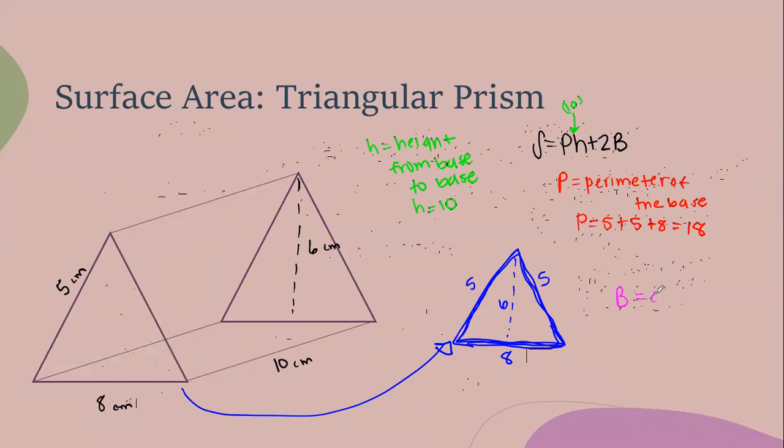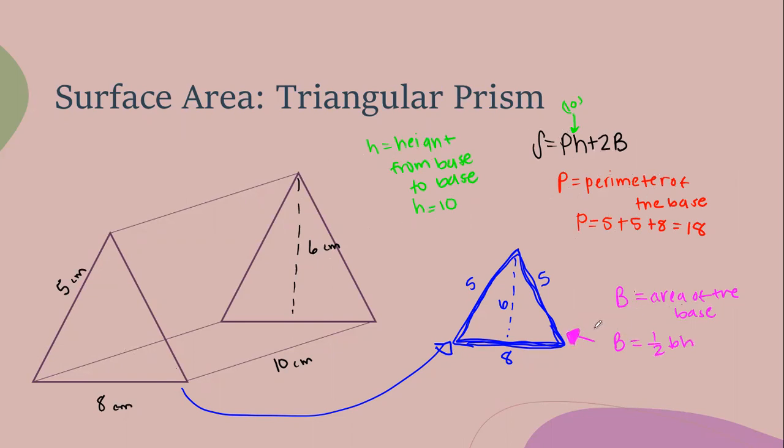And then capital B stands for the area of the base. I'm looking at my formula chart. I know my base is a triangle. So I'm looking at the formula of the area of a triangle. And the area of a triangle is one half base times height. Remember, I'm only looking at the base. I'm only looking at what I drew out. I'm not looking at anything else. So then B equals one half. What is the base of my triangle? 8. That means the bottom. So the bottom of my triangle is 8. And then what's the height of my triangle? 6. So then that's 24.